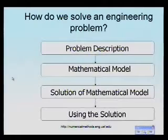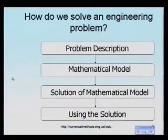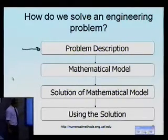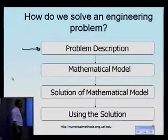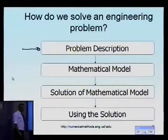Let's look at what the steps of solving an engineering problem are. The first thing you have to do is describe the problem itself, because if you don't know how to describe the problem, you won't be able to solve it. So it's very important that when somebody gives you a problem, you first write a description of what it is and what we are looking for.